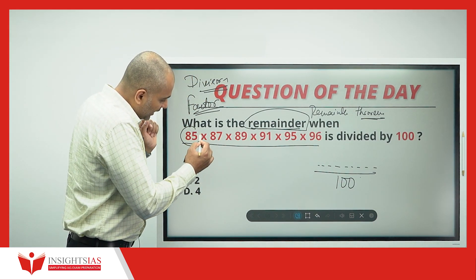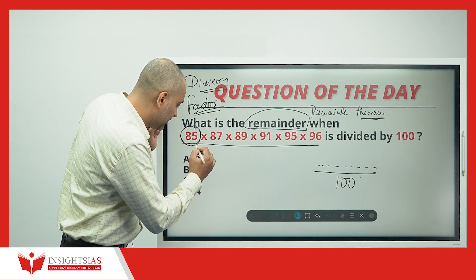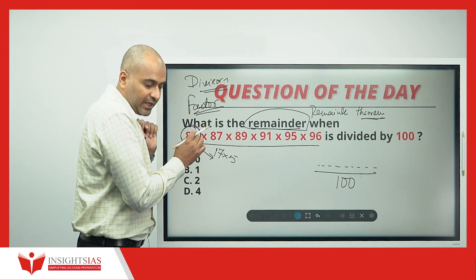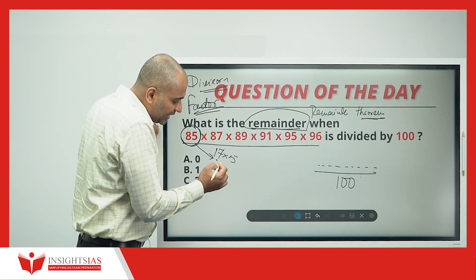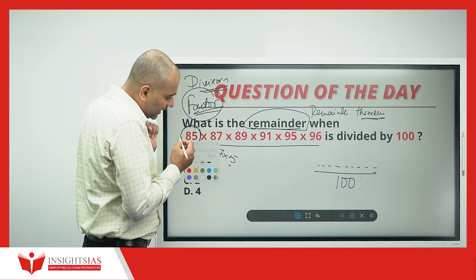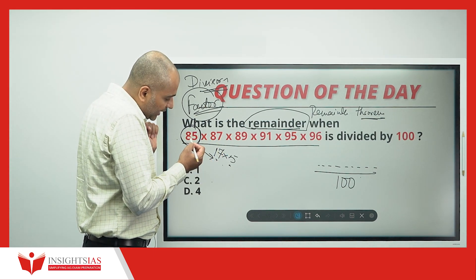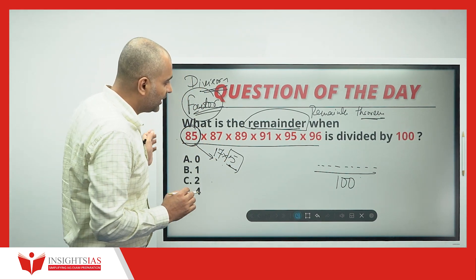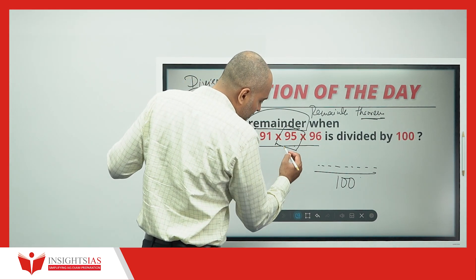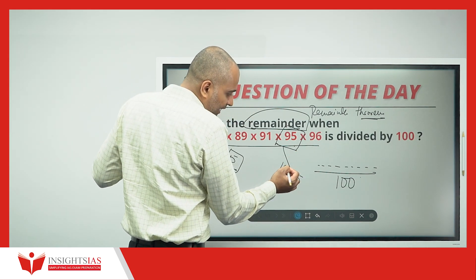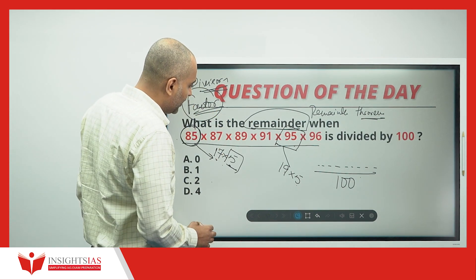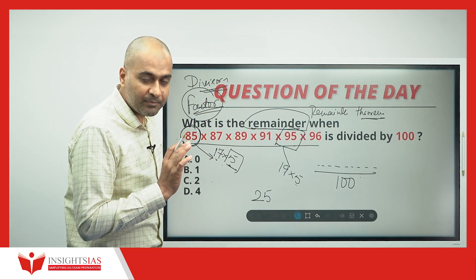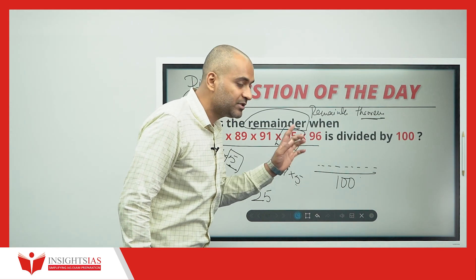Now, see here — this is 85, which means we have a 5 here. 85 can be split and written in this form: 17 × 5. These 17 and 5 are called factors of 85, meaning 85 can be divided by 17 and also by 5. So from 85, I can extract a 5. Similarly, here there is 95, which can also be written in the form of 19 × 5, where 19 and 5 are the factors of 95. So I got one 5 here and one 5 here — two 5s means 5 × 5 = 25. Definitely, this number is divisible by 25.